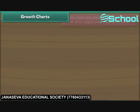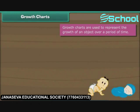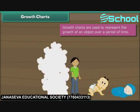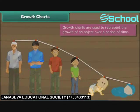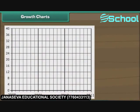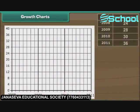Growth charts are used to represent the growth of an object over a period of time. Let us now trace the growth of Ravi over the past 3 years. We represent height vertically and years horizontally. In 2008, Ravi was 24 inches tall. Next year, he was 28 inches tall. In 2010, he grew to 30 inches. In 2011, he measured 36 inches. The growth chart of Ravi is ready.